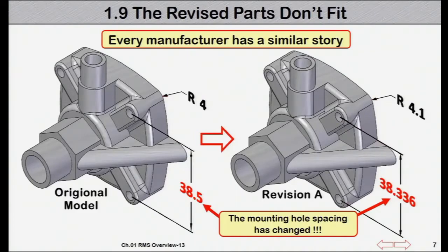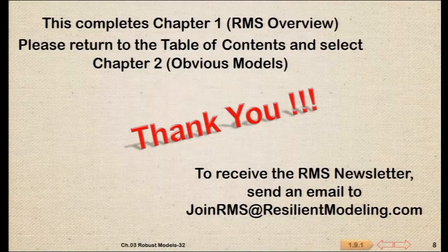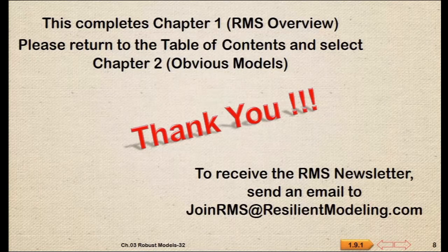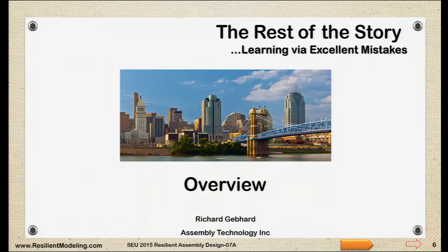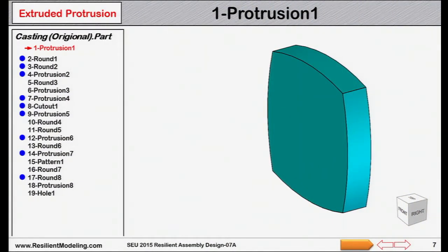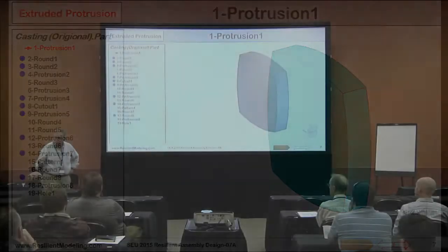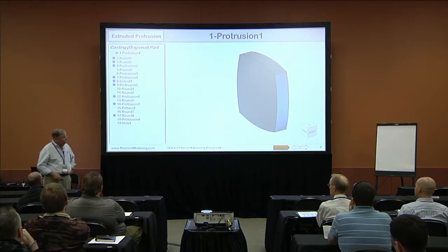Unfortunately, the new parts did not fit into the assembly due to an unintended parent-child relationship and an unobservable change in the distance between the dowels and holes. The result was 500 scrap parts and a late delivery to what used to be their best customer. Every manufacturer has a similar story. This concludes Chapter 1: RMS Overview.